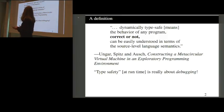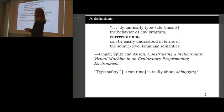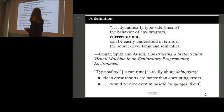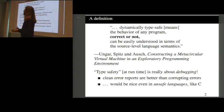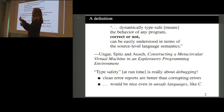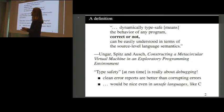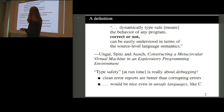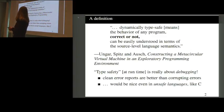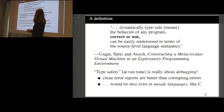I like to interpret type safety at runtime as really being about debugging — we want help for understanding when our programs have bugs in them. Clean error reports are better than corrupting errors. Without dynamic type safety, we barrel past some error, corrupting program state or failing much later than the actual problem. So it'd be nice to have this property even in unsafe languages like C, and that's what this talk is about.